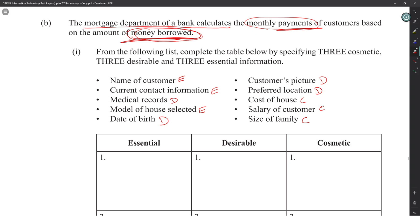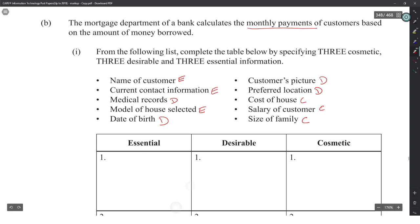All they're doing is calculating how much you'll pay — not checking if you qualify. If calculating monthly payment only, they just need to know the amount borrowed. The salary would be needed only if approving a loan. This question is a trap — many students and adults don't know how mortgages work. The key is reading: calculate monthly payments based on amount borrowed.